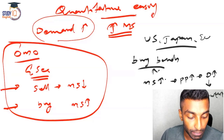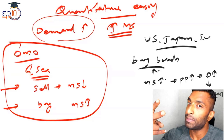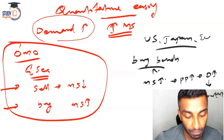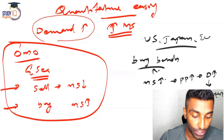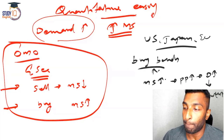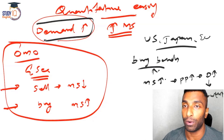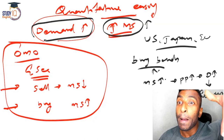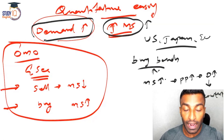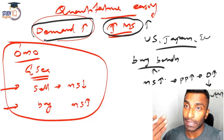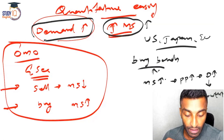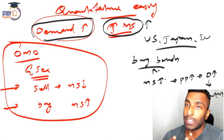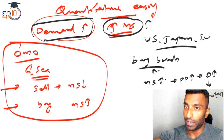Quantitative easing is an unconventional monetary policy measure — specifically an expansionary monetary policy measure — which seeks to stimulate economic growth or counter recession by increasing aggregate demand in the economy. Under quantitative easing, the central bank purchases a predetermined value of bonds from financial institutions for a predetermined time period. It is pursued by developed countries because in developing countries, demand is already high and further increasing it would cause inflation.